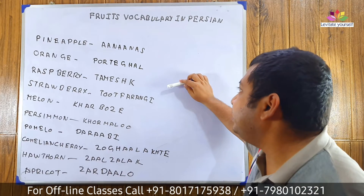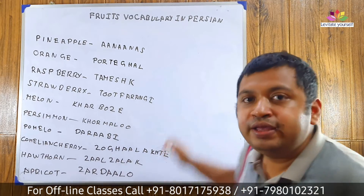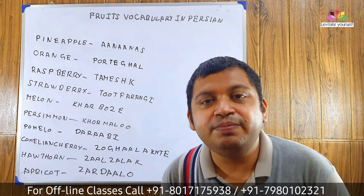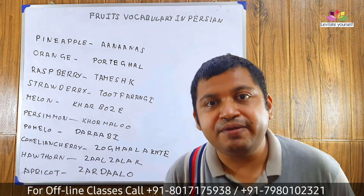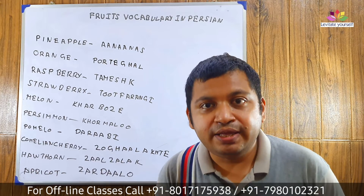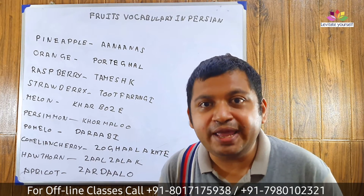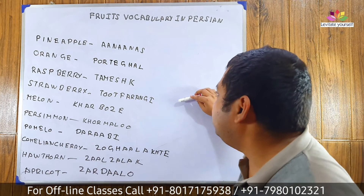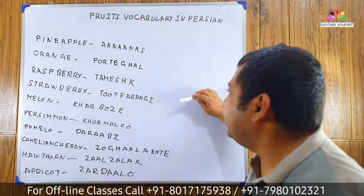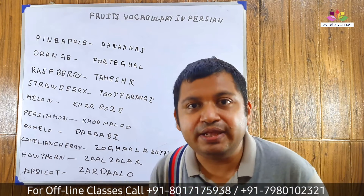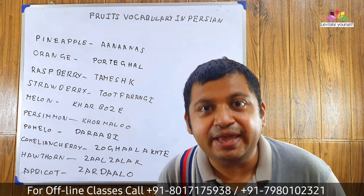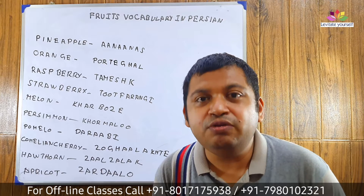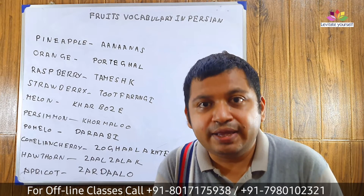Raspberry: Tameshk. Let's pronounce it with me: Tameshk. Let's move to the next word. Strawberry: Toot Faranghi. Let's pronounce it with me: Toot Faranghi.